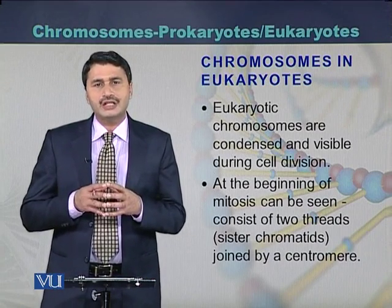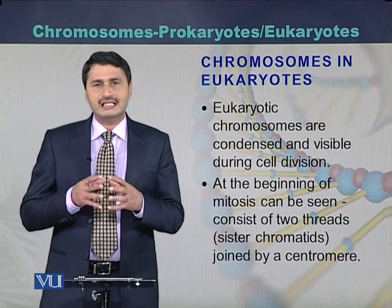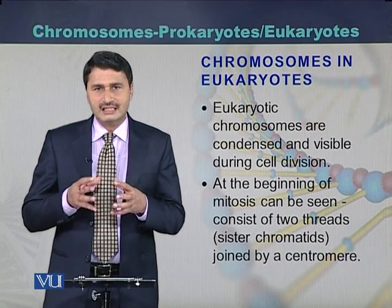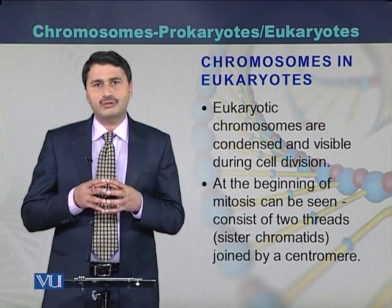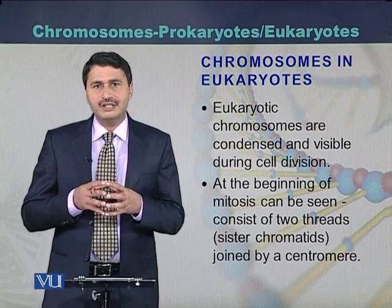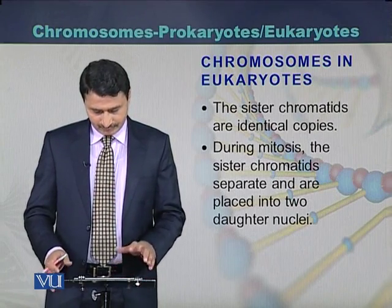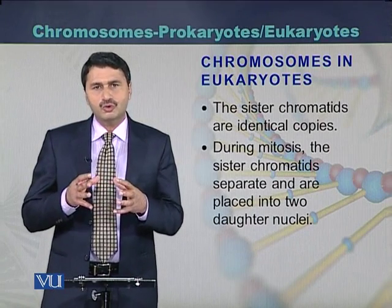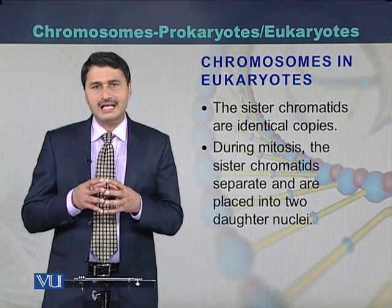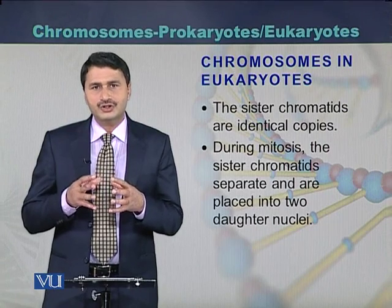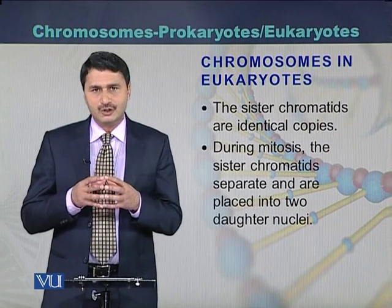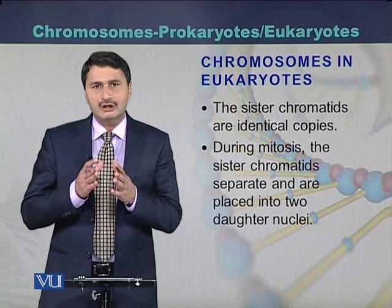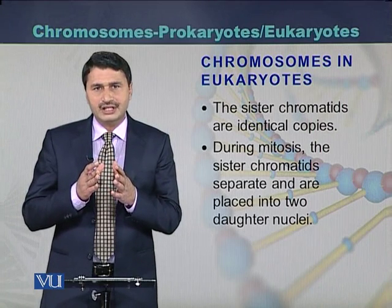Eukaryotic chromosomes are usually visible during cell division at the stage of metaphase. If the cell is functional, the eukaryotic chromosomes cannot be seen. Eukaryotic chromosomes consist of two chromatids which are called sister chromatids, and they are joined by the centromere.